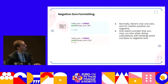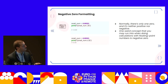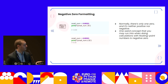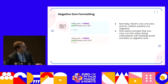Negative zero formatting is fixed. Normally there is only one zero and it's neither positive nor negative. One weird concept you might run into when doing calculations with floating point is that previously Python would return minus zero. This is now fixed and we don't have that problem anymore.